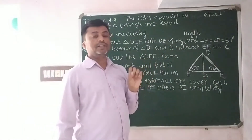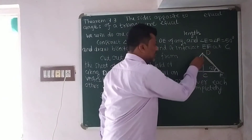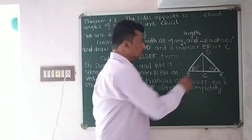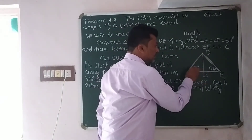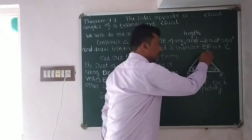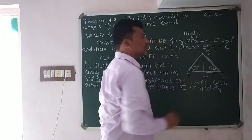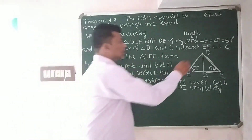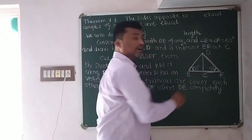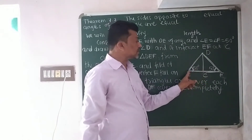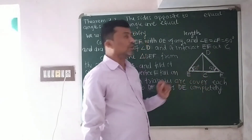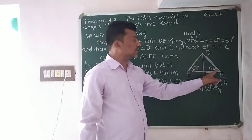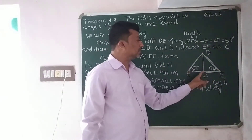Triangle DEF is already constructed. This is the triangle DEF with EF of any length. This is angle E, its measurement is 50 degrees. This is angle F, its measurement is also 50 degrees. Then we draw the bisector of angle D, which intersects line segment EF at point C.